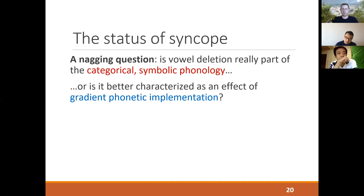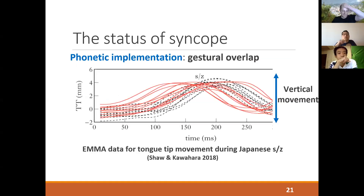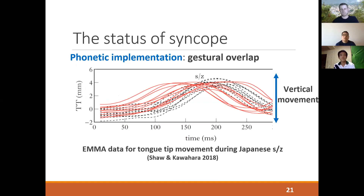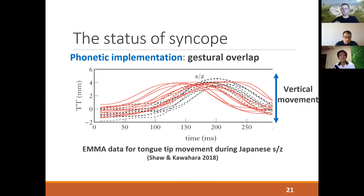To give you a sense of the phonetic alternative: when we produce constrictions for consonants or vowels, those constrictions have an extent in time and space. It takes time to move your articulators to the right place. What we're looking at here is EMA data showing vertical movement of the tongue tip in the time course of forming a constriction for 's' and 'z' in Japanese. There's a phase where the tongue tip raises to the alveolar ridge, a phase where the constriction is achieved and maintained, and then a phase following the release.